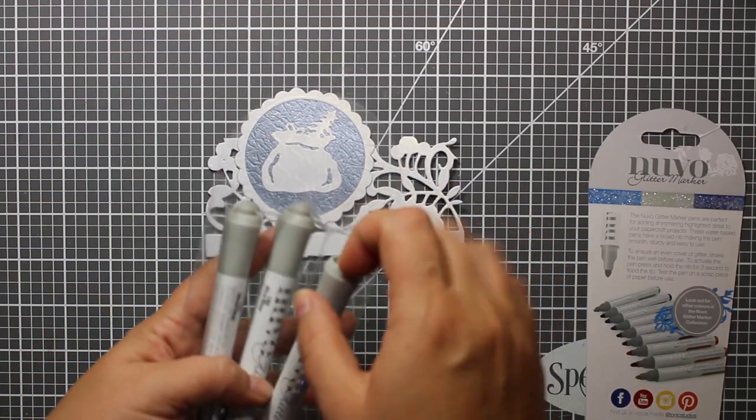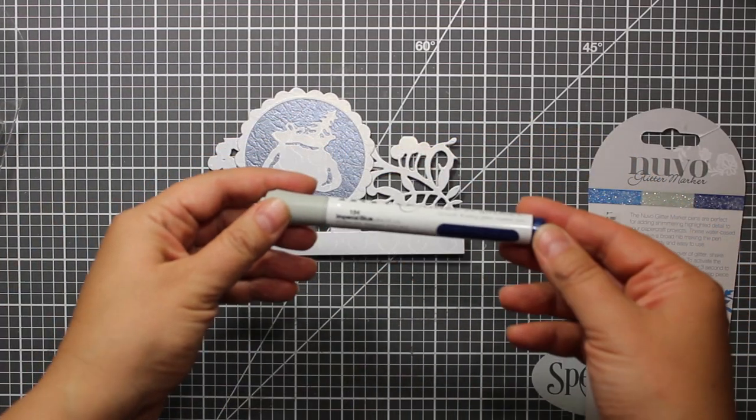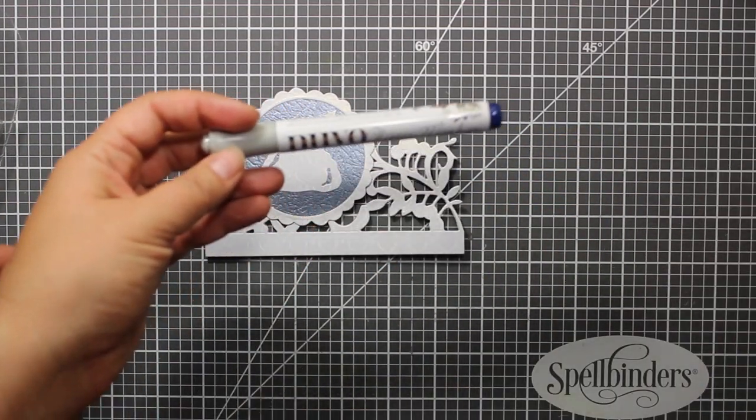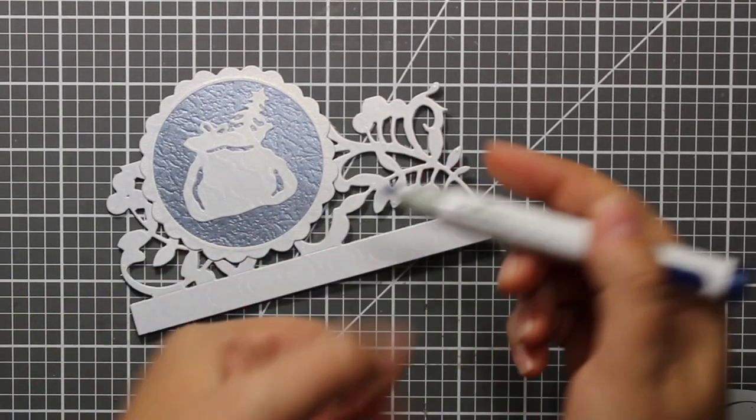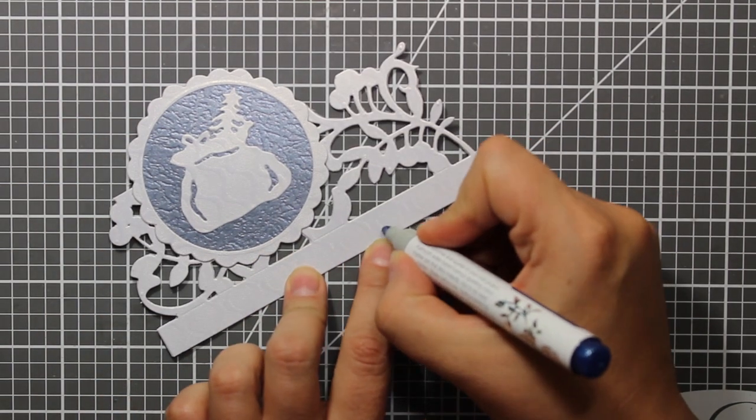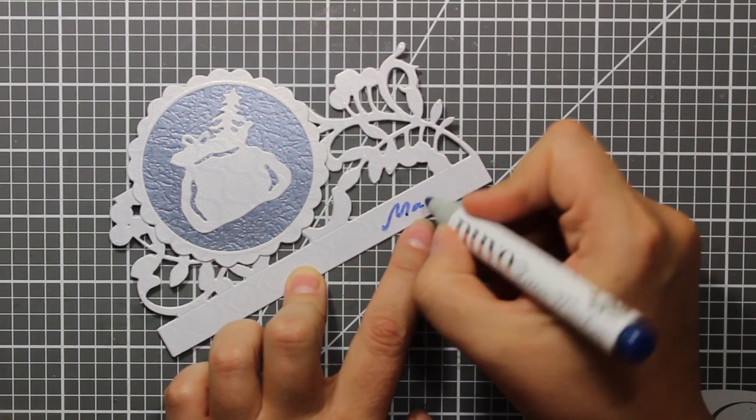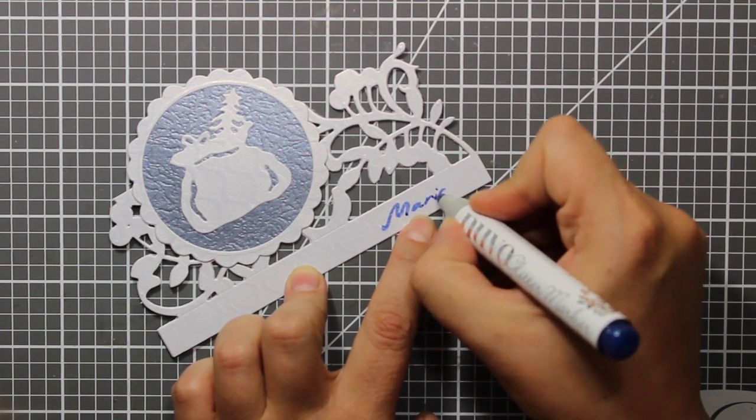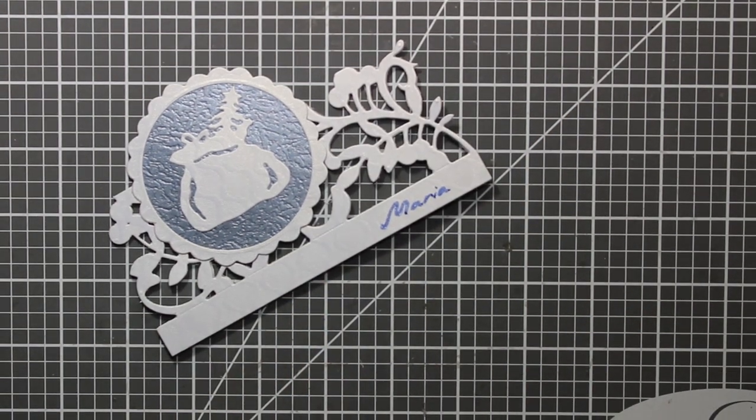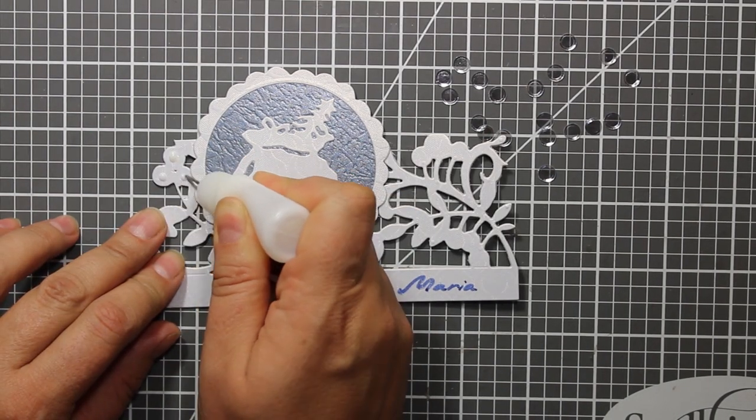To write down the name on the card I'm going to use a glitter marker. This one is by Nuvo and the color is imperial blue. By the way, if you don't feel like writing you can simply print out the names then cut the paper into strips and stick it down.